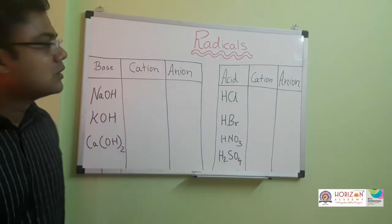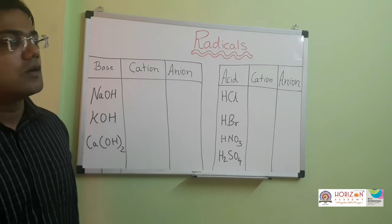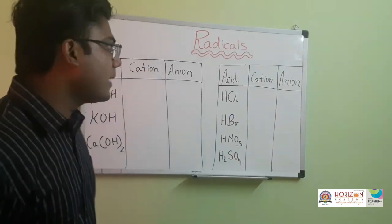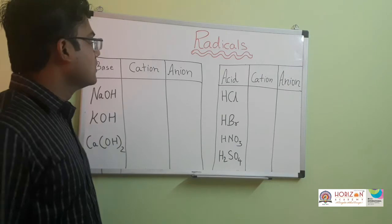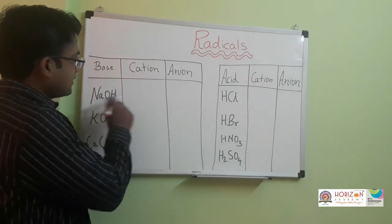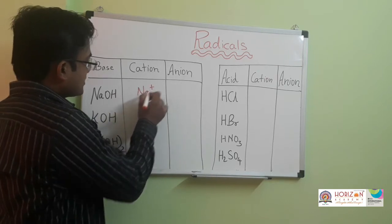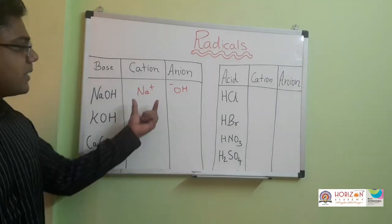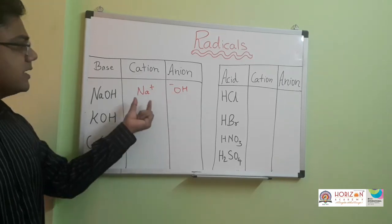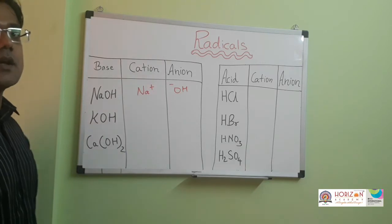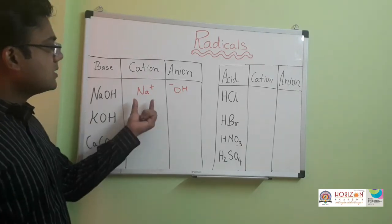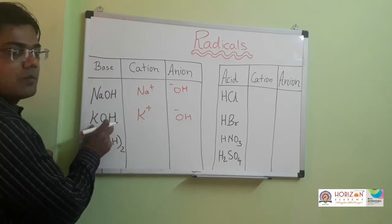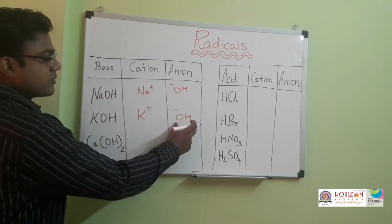Let us start the next topic: radicals. In ionic compounds like NaCl, there are two parts — cation and anion — which are independently known as radicals. For example, NaOH has Na plus and OH minus. The positive part is the cation and the negative part is the anion. Na plus and OH minus take part independently in reactions, which is why they are called radicals. Similarly, KOH is formed by positive radical K plus and negative radical OH minus.